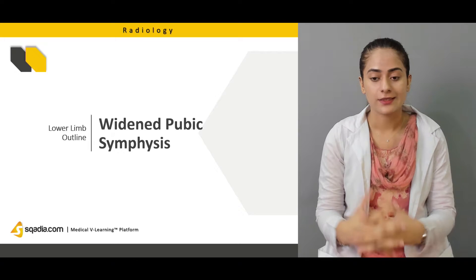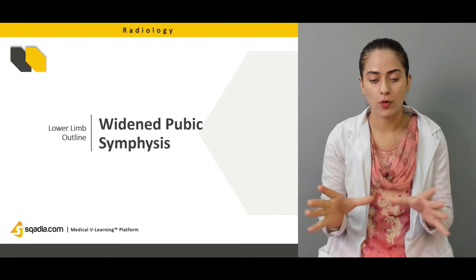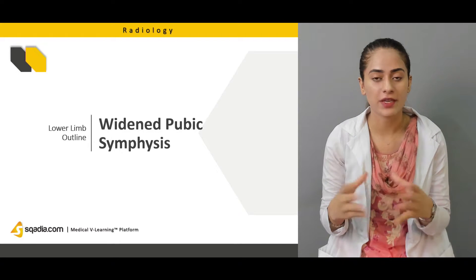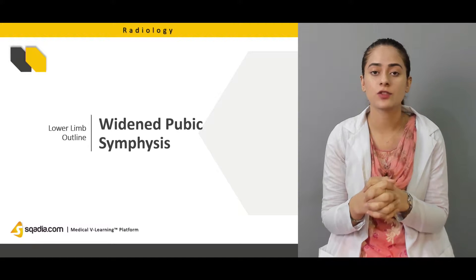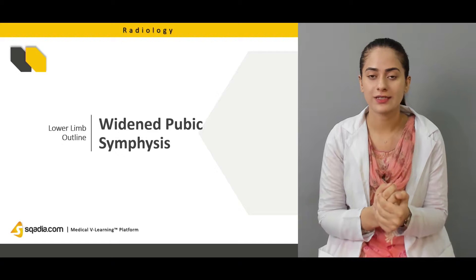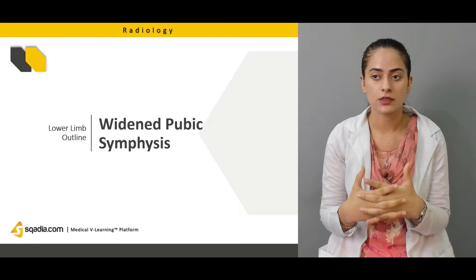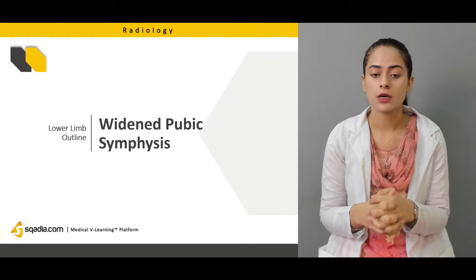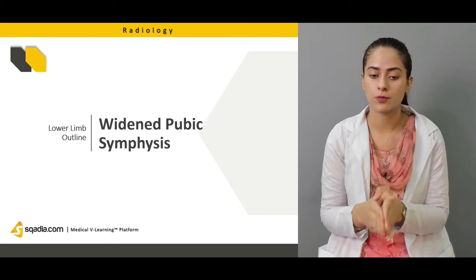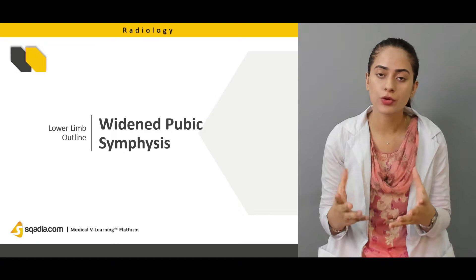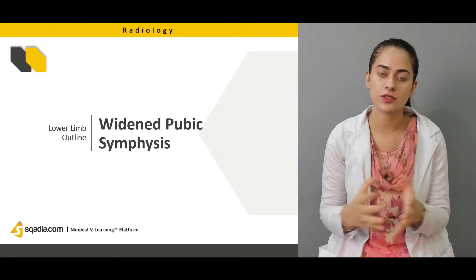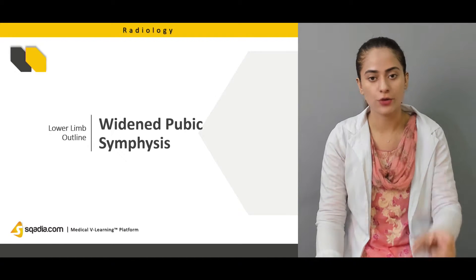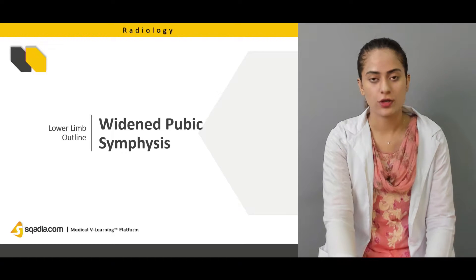There is also the pubic symphysis, which is the inferior point where the two pelvis bones connect. The normal range for pubic symphysis width is four to five millimeters. In conditions like pregnancy, it can increase to nine millimeters. But in normal conditions, any space beyond four to five millimeters is a problem that can be diagnosed by measuring this distance.